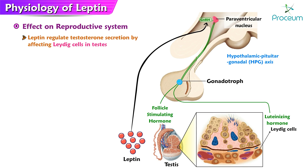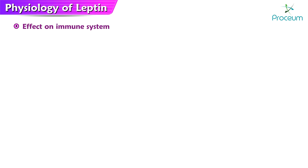In males, leptin has been shown to regulate testosterone secretion by affecting the function of the Leydig cells in the testes, which are responsible for the production of testosterone. High levels of leptin have been linked to increased testosterone secretion, which can have a positive effect on sperm production and male fertility.